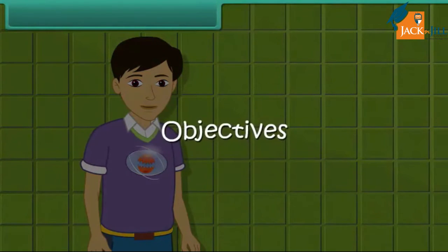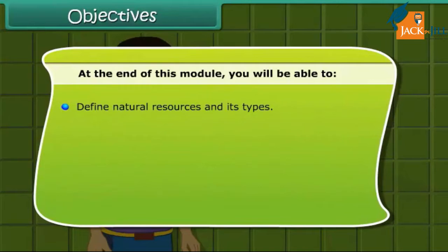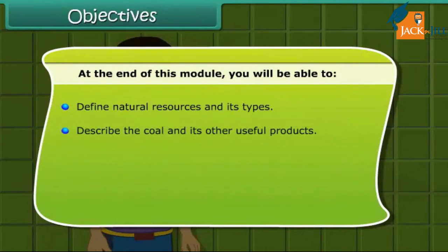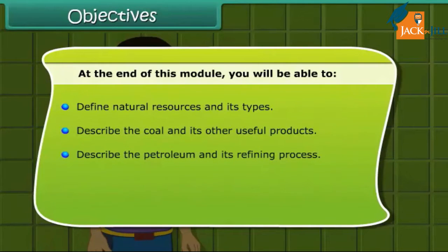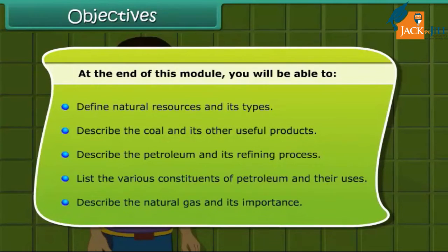At the end of this module, you will be able to: define natural resources and its types; describe coal and its other useful products; describe petroleum and its refining process; list the various constituents of petroleum and their uses; and describe natural gas and its importance.